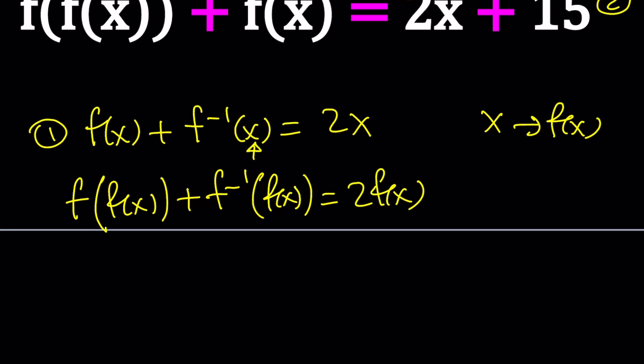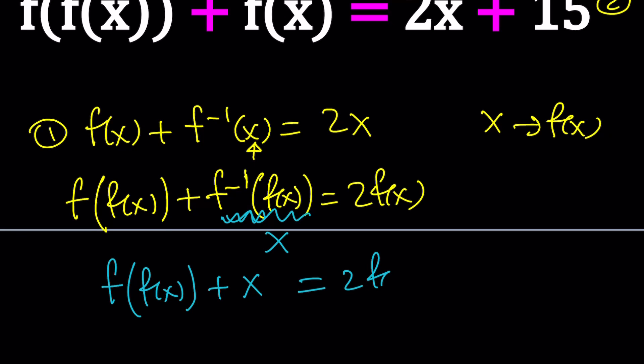Be careful — a lot of times people forget to replace x with whatever it is on both sides; you have to do it completely. Now notice that f⁻¹(f(x)) — these two undo each other, leaving us with just x. So this gives us another equation: f(f(x)) + x = 2·f(x). That gives us f(f(x)) in terms of f(x), which we can compose again. Combine this with the second equation.